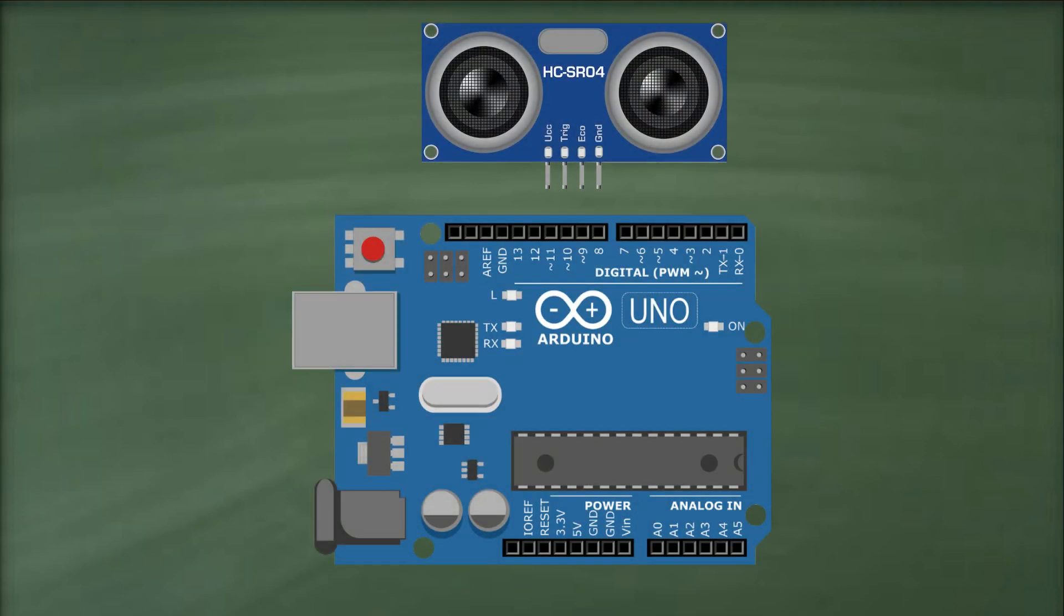Now, let's implement everything we've learned in a small project. We'll start by connecting our HC-SR04 sensor to the Arduino. The connections are straightforward. Connect the VCC and GND terminals to the 5V and GND terminals on the Arduino. Then, connect the trigger and echo pins to digital pins 10 and 9 on the Arduino, respectively.